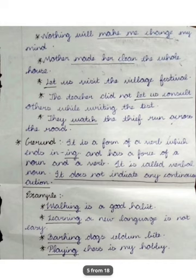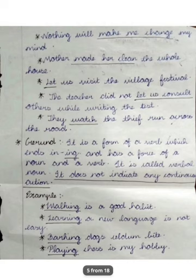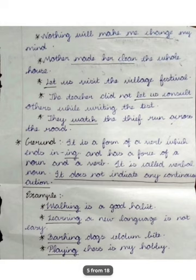Now let's move to gerund. The gerund is a verb with an '-ing' form, but you should not immediately take it as a continuous form. The gerund acts as a noun. It is a form of a verb which ends in '-ing' and has the force of both a noun and a verb — it is called a verbal noun.